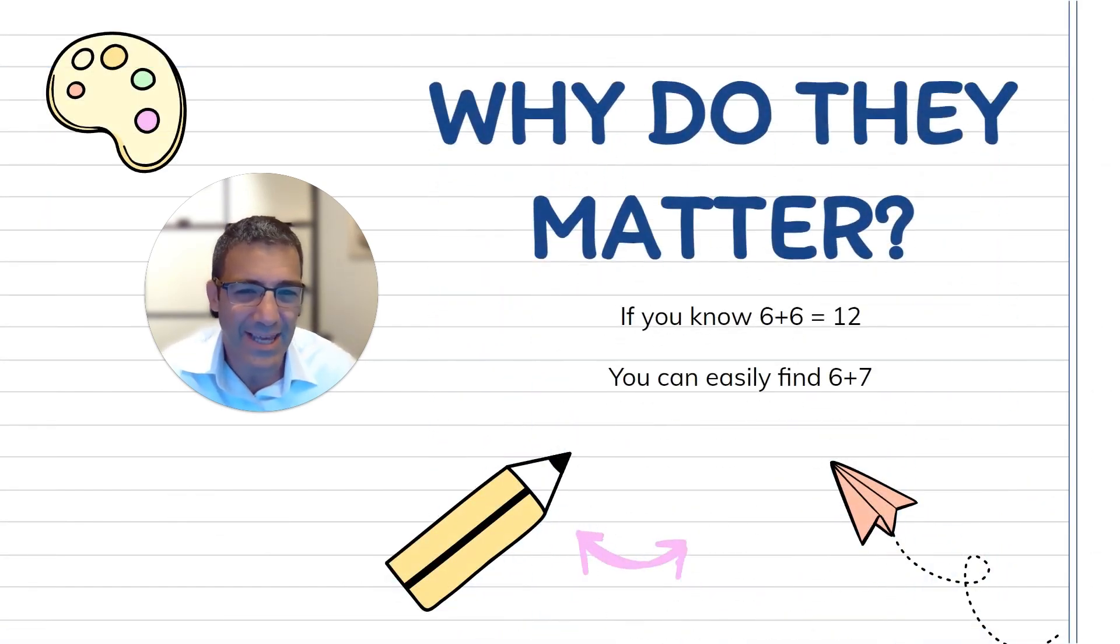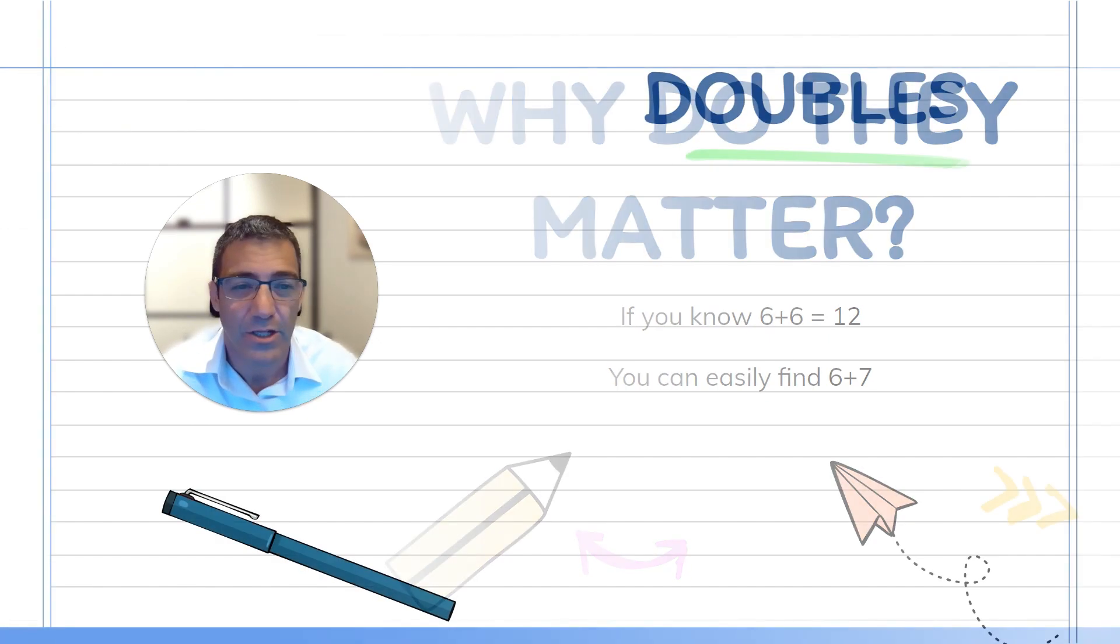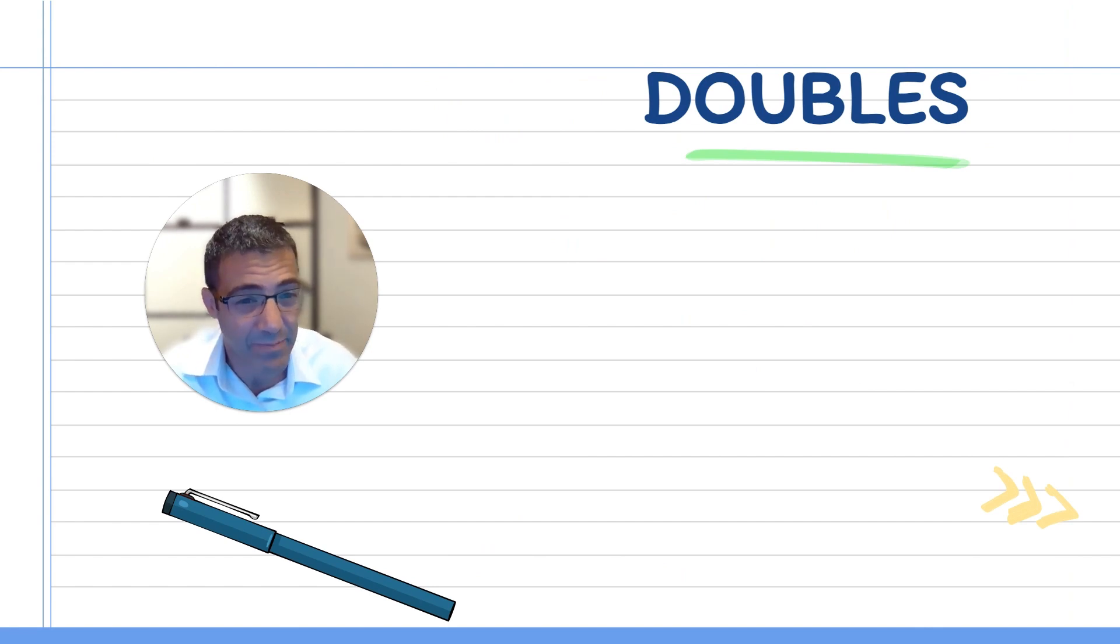So why does doubling a number matter? Well, another point is that if you know that six plus six is 12, you'll be able to do an operation like six plus seven relatively easily because it's six plus six plus one. So knowing the fact that six plus six is 12 helps you with decimals, it helps you with 0.5, and it definitely helps you with operations like six plus seven, which is 13, one more than 12.